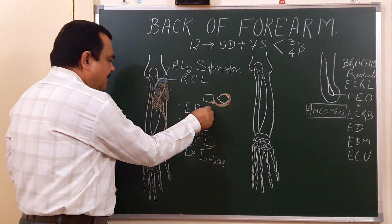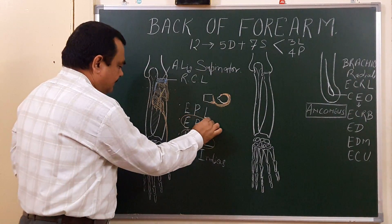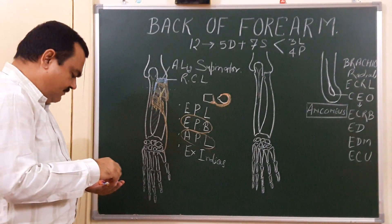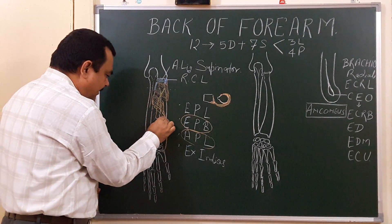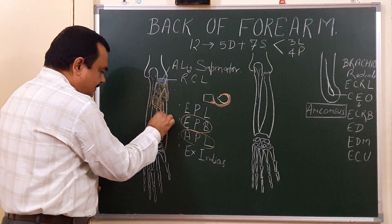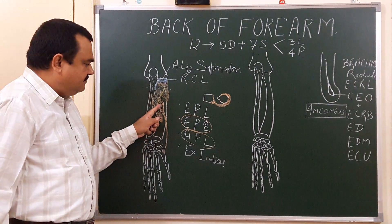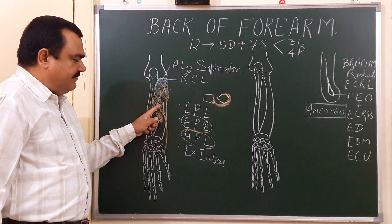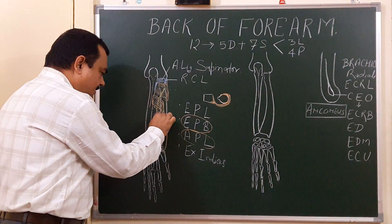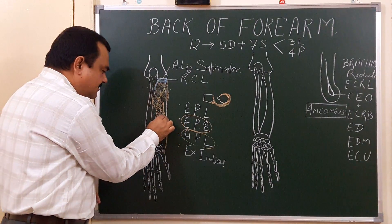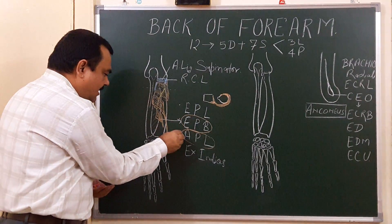The extensor pollicis brevis muscle arises from the posterior surface below the origin of abductor pollicis longus. Its tendon is inserted on the base of the proximal phalanx of the thumb.